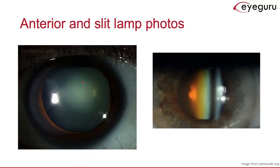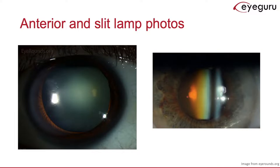Here are some other slit lamp photos showing nuclear sclerotic cataracts. On the left, a view of the eye in diffuse lighting shows the cataract is most prominent centrally and is very cloudy and opaque. On the right, a slit beam view shows the cornea, the anterior surface of the lens, and the anterior chamber in between. As you can see, this cataract has caused the lens to become very brunescent, or yellow-brown.